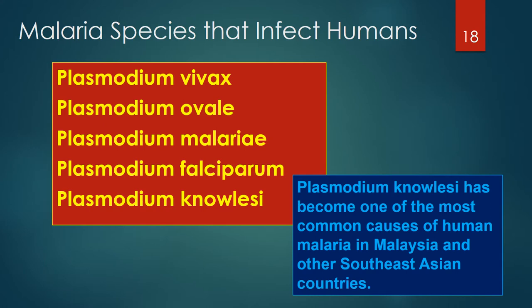There are five species of malaria that infect humans: Plasmodium vivax, Plasmodium ovale, Plasmodium malariae, Plasmodium falciparum, and Plasmodium knowlesi. Plasmodium knowlesi was thought to be a parasite of macaque monkeys and was used in the past to treat syphilis by inducing a fever in humans. It has now become one of the most common causes of human malaria in Malaysia and other Southeast Asian countries. Ten percent of knowlesi infections are severe, and 1–2% of knowlesi infections are fatal.